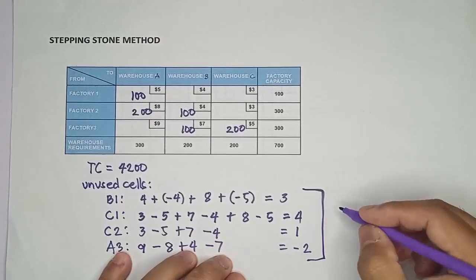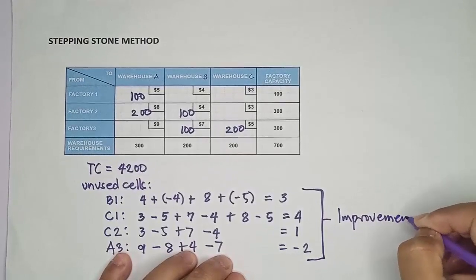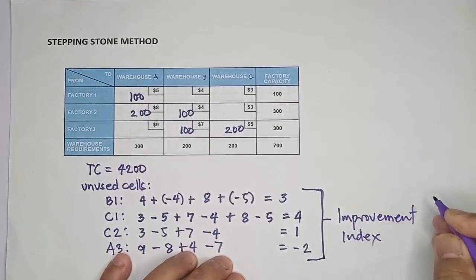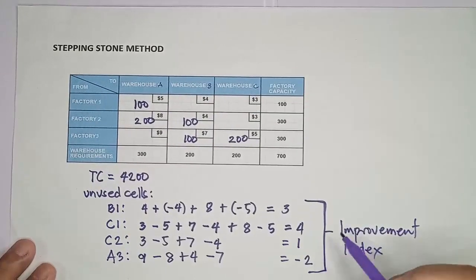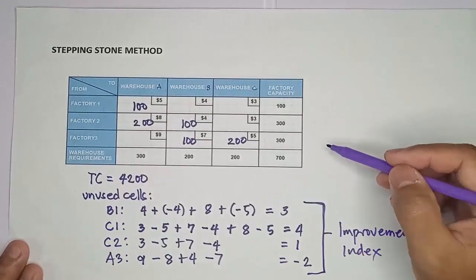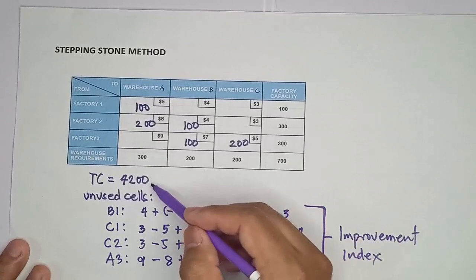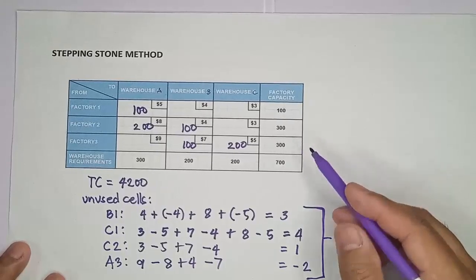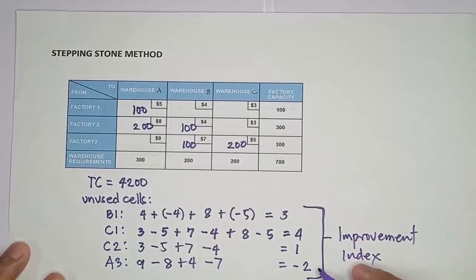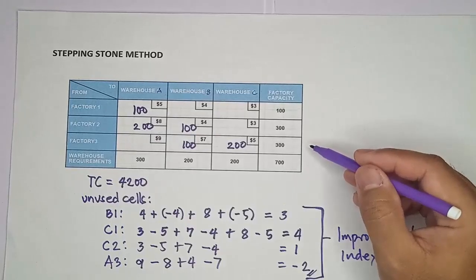These numbers we're going to call the improvement index. If all improvement indices are positive, the solution is already optimal and we can no longer improve it — that value would be the lowest transportation cost using this allocation. But since we have a negative number in the improvement index, we can still improve this initial solution.